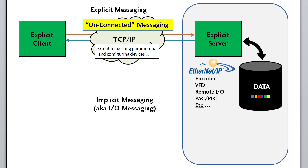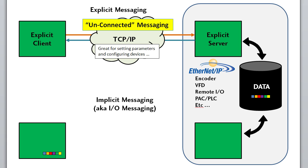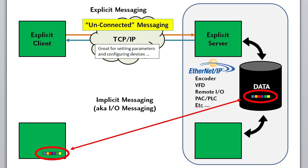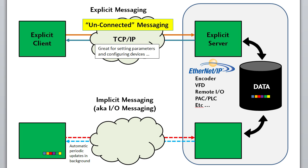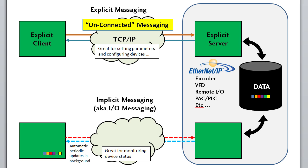Implicit messaging, on the other hand — which we also call I/O messaging — is time critical and is much more efficient. The reason it's more efficient is you preset up, or connect, both ends so they know implicitly exactly what to expect, without having to include the extra communication baggage in each and every message. The data is simply copied back and forth at a periodic rate in the background. You don't have to do anything once it's enabled — the data just appears on your local controller as if it was local I/O. This is ideal for things like monitoring the speed of a variable frequency drive.